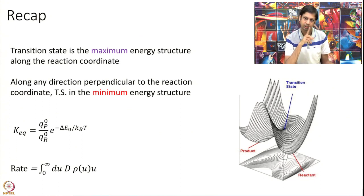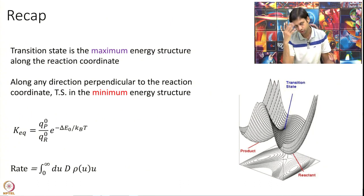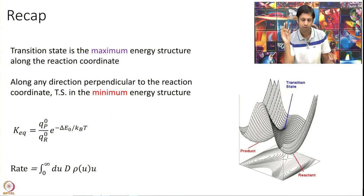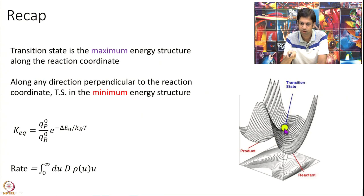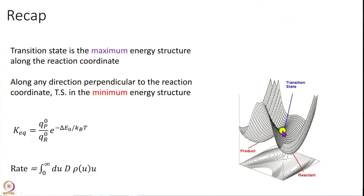A major confusion I have seen with many people: the transition state is not the global maxima of the potential energy surface. On a sample potential energy surface, going from reactant to product, the maximum that occurs along that path is the transition state. But if you draw a perpendicular line at that point, you will see there are other points on the energy surface that are higher in energy than the transition state.